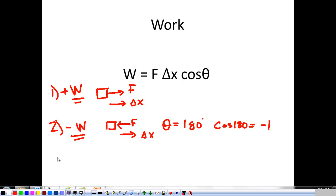And then our third case is when work is equal to zero. In that case, I have my object, I have my force on the object. But the displacement of the object is at a 90 degree angle to the work that's being done. Now, if we take the cosine of 90, it gives us zero.